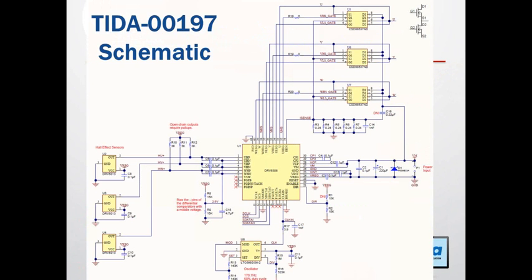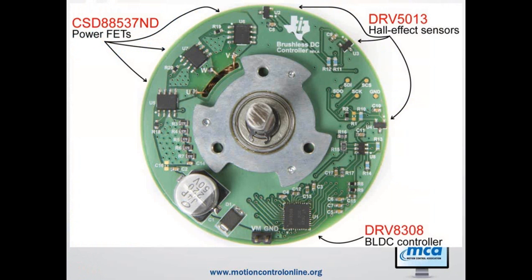Here is the board top-down view. The motor phase windings come through the slot in the top left. One really nice thing about this board is that the external connector is simply power and ground — once you apply 24 volts, the whole motor automatically spins.